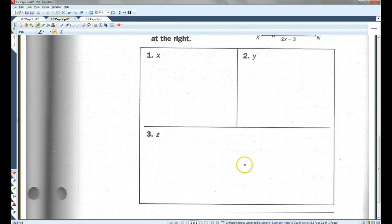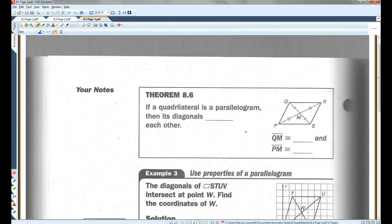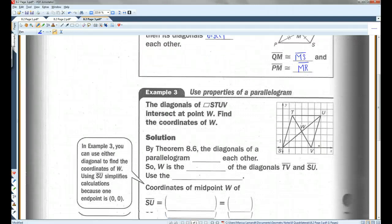All right. I'll let you guys solve for X, Y, and Z in the checkpoint. Let's go on to page 3. Okay. If a quadrilateral is a parallelogram, then the diagonals bisect each other. Now, remember, bisect means it cuts in half. So, these diagonals cut each other in half. So, this is going to equal this. This is going to equal this. So, QM is congruent to MS. And PM is congruent to MR.